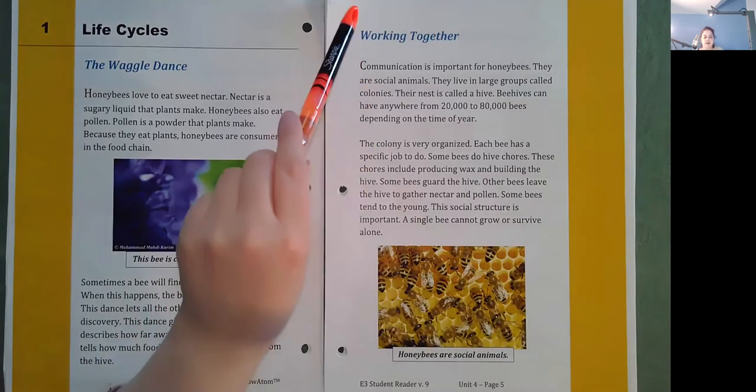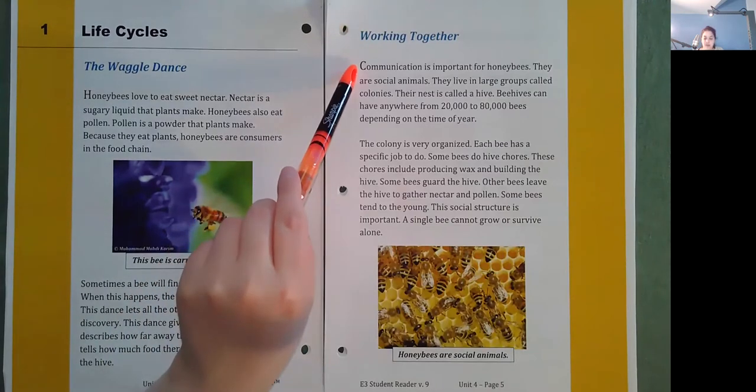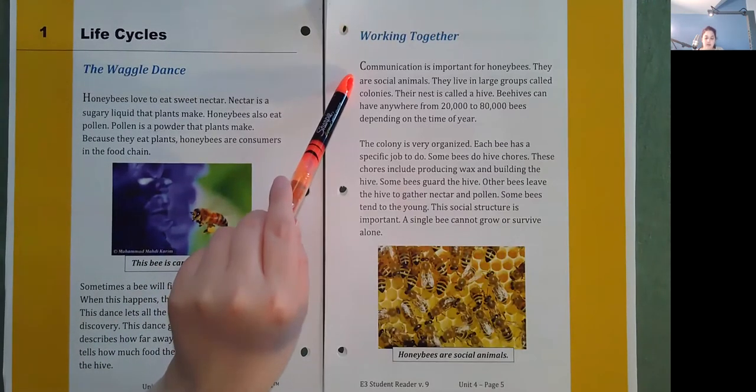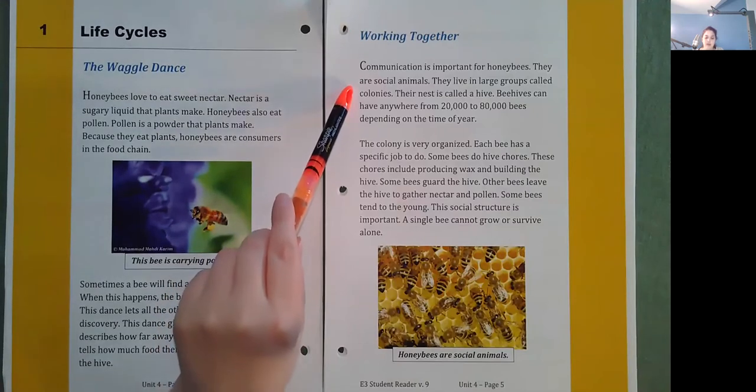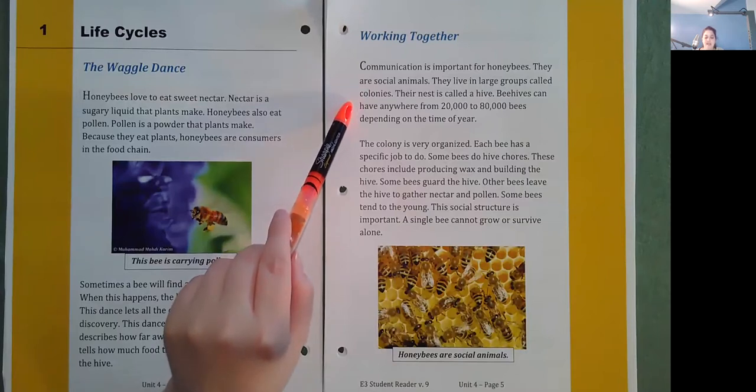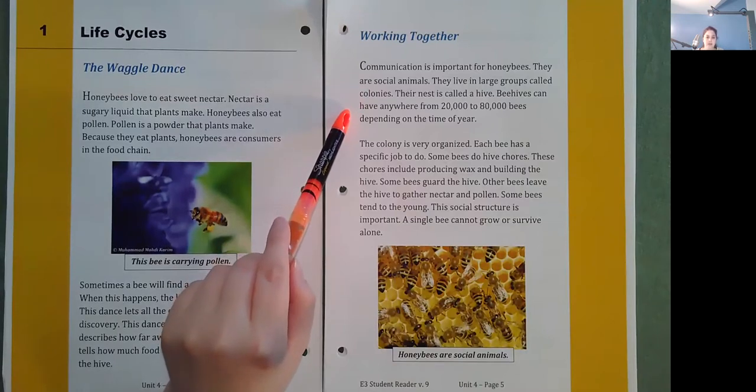Working together. Communication is important for honeybees. They are social animals. They live in large groups called colonies. Their nest is called a hive. Beehives can have anywhere from 20,000 to 80,000 bees depending on the time of year.